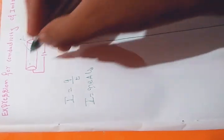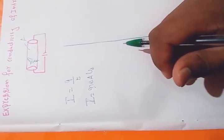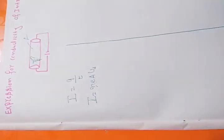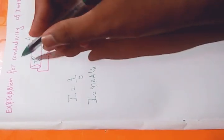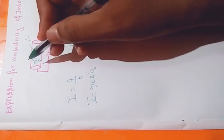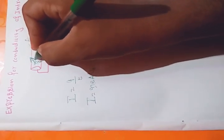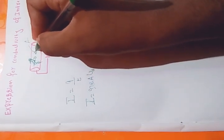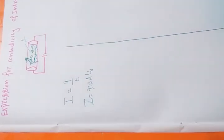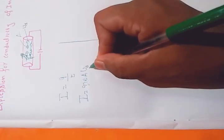At normal room temperature, electrons and holes are randomly moving, and the net motion is always zero. As soon as an electric field is applied, this random motion is converted into uniform motion. All electrons and holes start moving with a certain velocity — that velocity is called drift velocity, Vd.